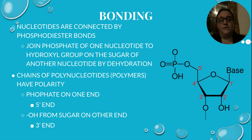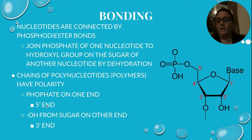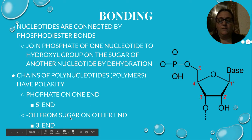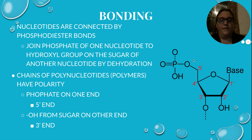The polymers we're talking about — DNA and RNA — have polarity; they have a charge. On one end, there's a phosphate, which is what we call the five-prime end, and you can see that because of the fifth carbon. And then the OH from the sugar on the other end is called the three-prime end. So we've got the five-prime end and the three-prime end.